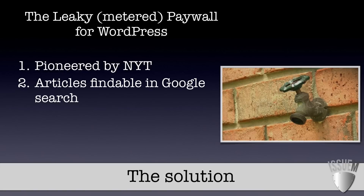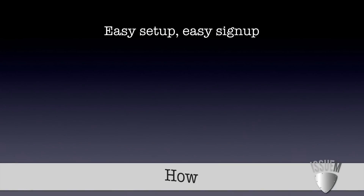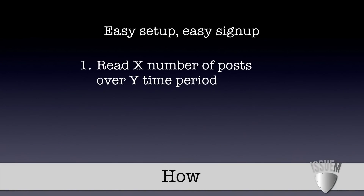It also lets articles get found in Google Search and be shared in social media. Readers can sample what they want, and if they like what they see, they'll share it. It's easy to configure as well — all you have to do is decide how many articles or blog posts you want readers to read for free over a certain time frame.